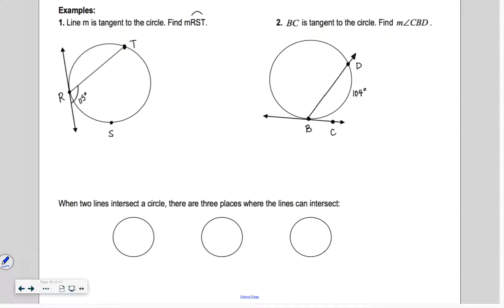So line M is tangent to the circle. Find the measure of arc RST. So RST going around. If we have an angle of 115 how do I get angle R or the measure of arc RST? Yeah, I double 115. So two times 115 ends up being 230 degrees. That's it. Mind numbingly easy, isn't it?